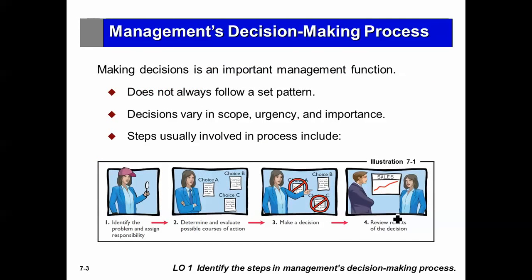To begin with, management's decision-making process. There is no set pattern. However, the important step is to identify the problem that we are going to analyze. If we have a problem, that means we have at least two alternatives or choices — maybe three. If we don't have any alternatives or choices, we don't have a problem. But because we have a problem, we have a couple of ways to go about solving it.